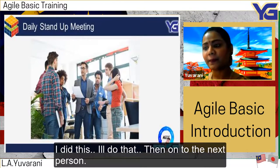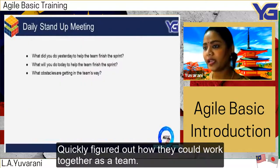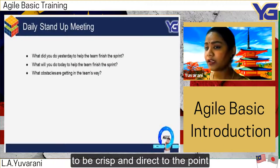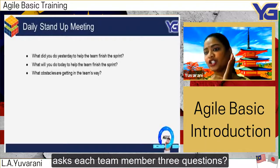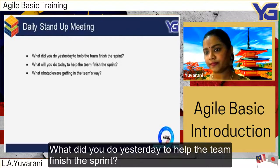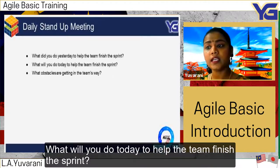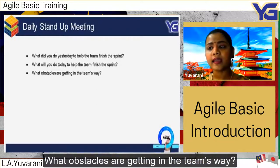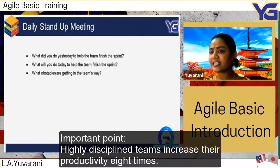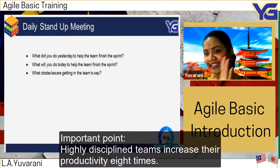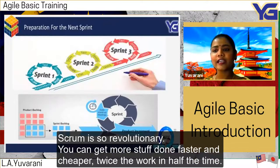During the stand-up, everyone actively participates — they stand up, actively listen, and speak, which keeps the meeting short. The scrum master — the person in charge of running the process — asks each team member three questions: What did you do yesterday to help the team finish the sprint? What will you do today to help the team finish the sprint? What obstacles are getting in the team's way? A highly disciplined team increases productivity eight times. Scrum is so revolutionary — you can get more done faster and cheaper: twice the work in half the time.